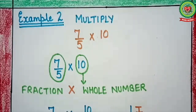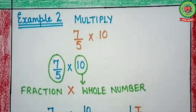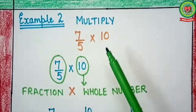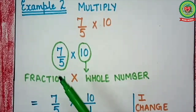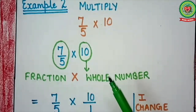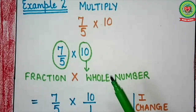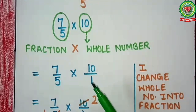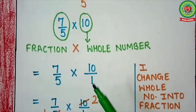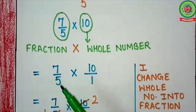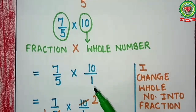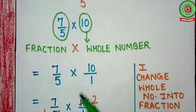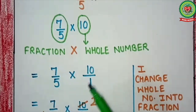Now let's see the second example. Here we have to multiply 7 upon 5 by 10. Again we are multiplying a fraction by a whole number. So Step 1: change the whole number as a fraction. It will come 7 upon 5 multiplied by 10 upon 1. Step 2: up, down and cross cutting.